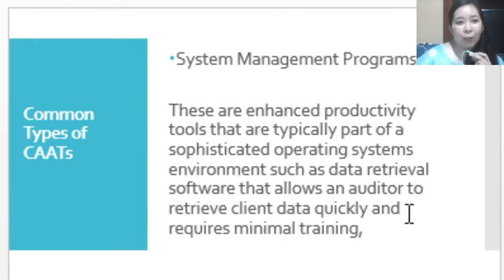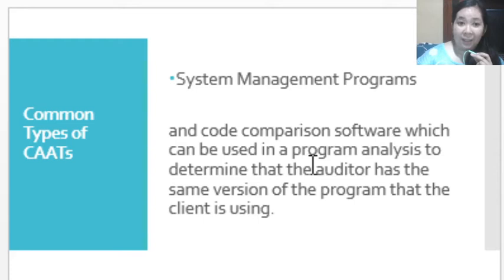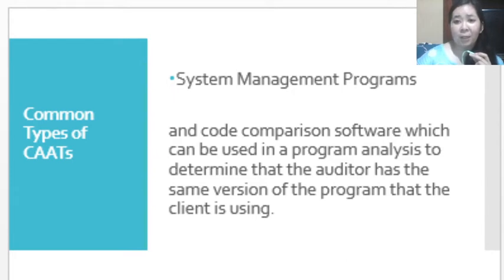Another type of CAAT is the system management program. These are enhanced productivity tools that are typically part of a sophisticated operating system environment. It can perform data retrieval, allowing an auditor to retrieve client data quickly with minimal training. Code comparison software is also included, which can be used in program analysis to determine that the auditor has the same version of the program that the client is using.